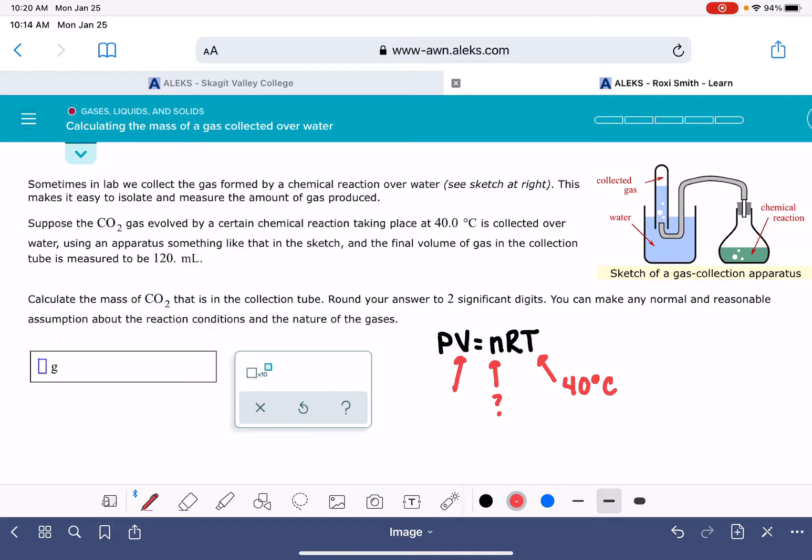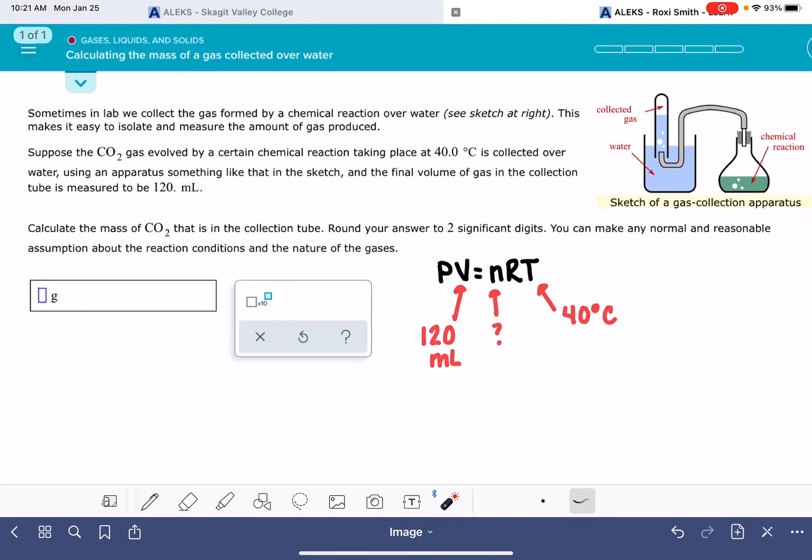But it's not giving any information about the pressure. It does tell us we could make normal and reasonable assumptions about the conditions and the nature of the gases. These normal and reasonable assumptions is where we're going to get the information about the pressure we need to finish solving this problem.